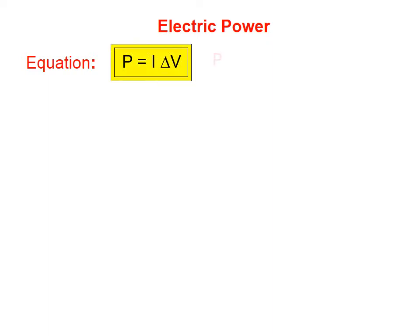The equation for electric power is P equals I times delta V, where P is the power rating, or the power consumed, in watts.